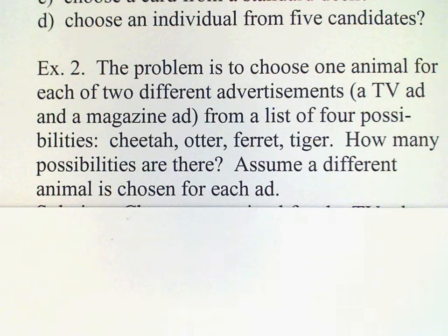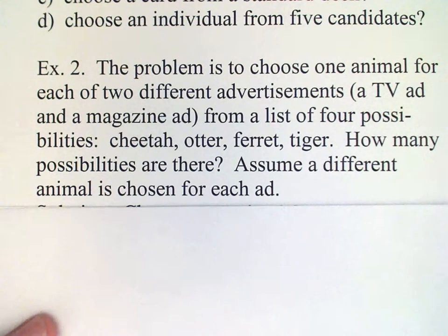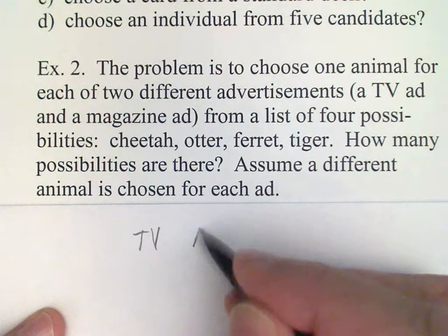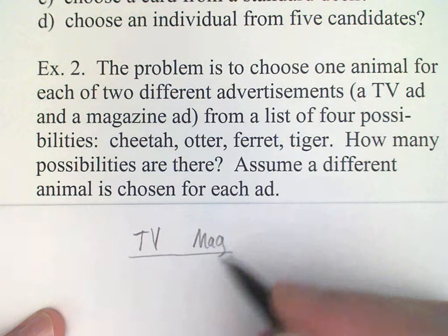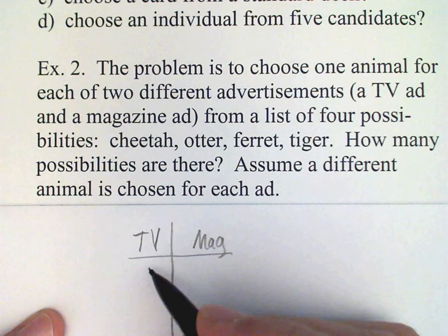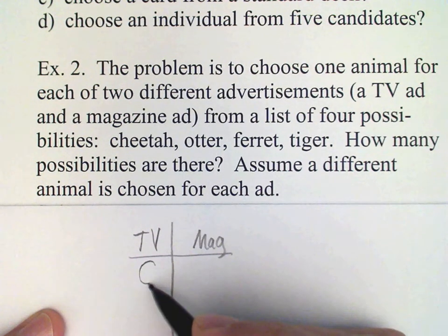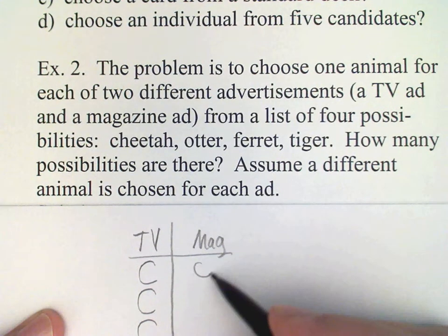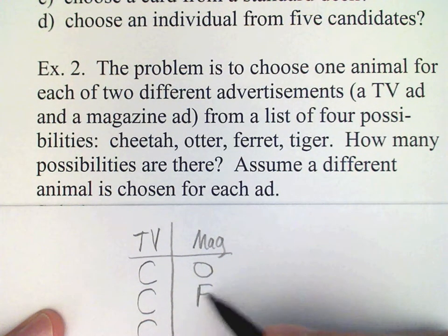For small counting problems such as this one, probably the most practical way to solve the counting problem is just to list out all the different possibilities. So for TV and magazine — I'm going to abbreviate COFT — if we choose the cheetah for the TV ad, then there are three possibilities for the magazine ad: the otter, the ferret, and the tiger.